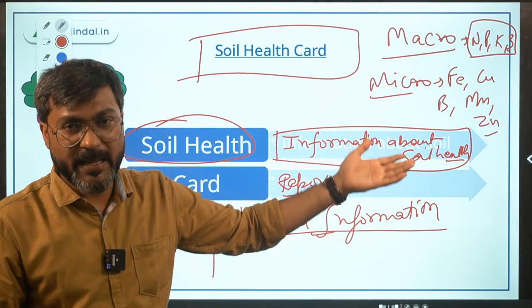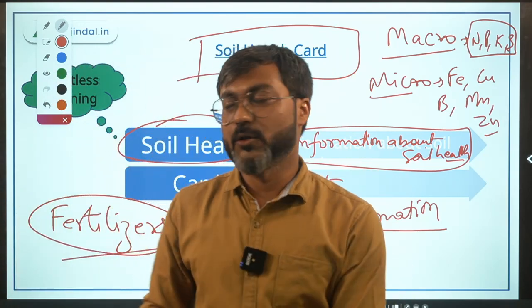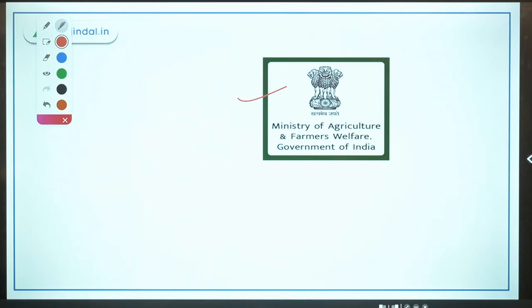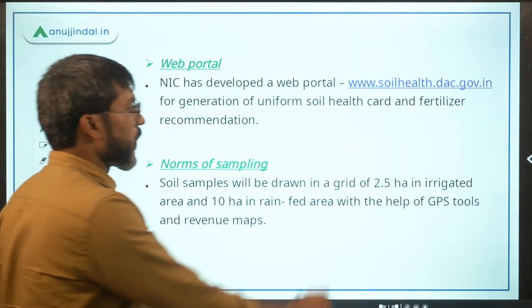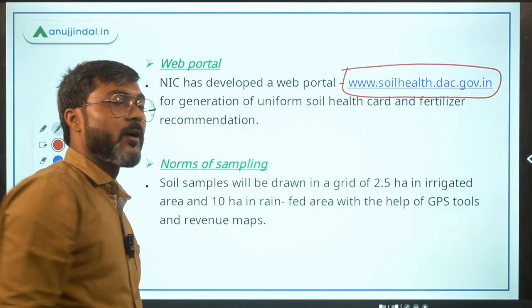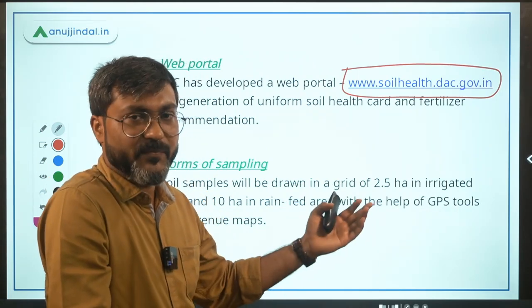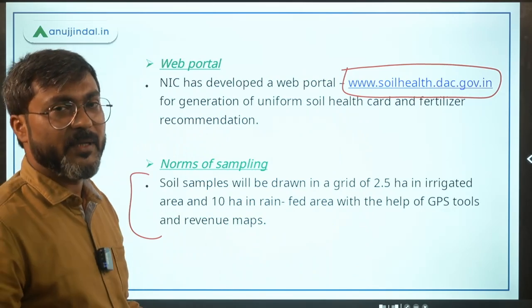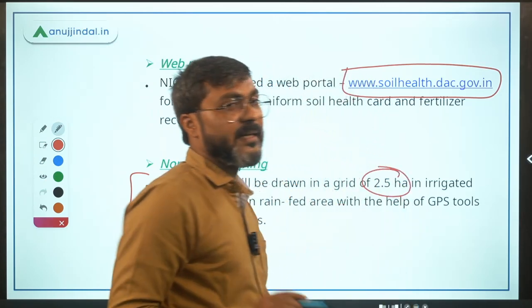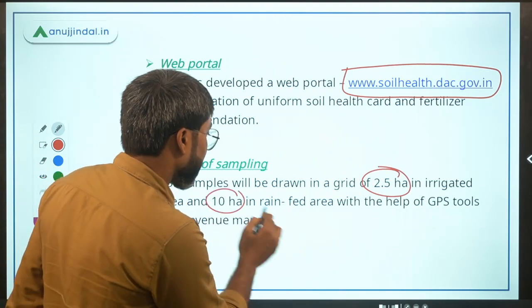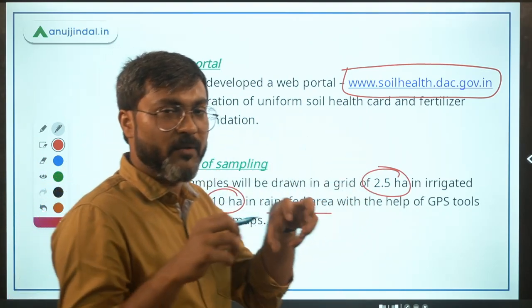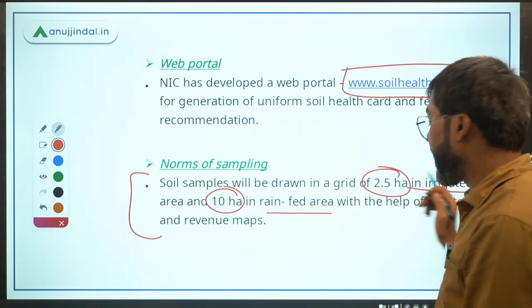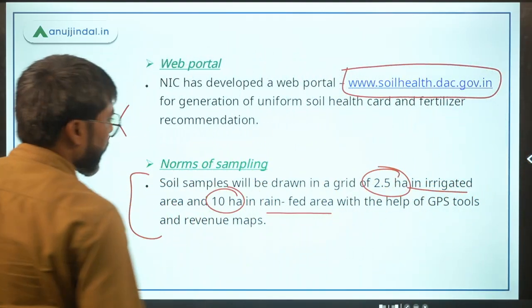The scheme is implemented by the Ministry of Agriculture and Farmers Welfare, headed by Mr. Narendra Singh Tomar. There is a web portal — www.soilhealth.dac.gov.in — from where soil health cards can be printed and accessed by farmers. Regarding sampling norms: soil samples are drawn from a grid of 2.5 hectares in irrigated areas, while in rain-fed areas the grid size is 10 hectares.